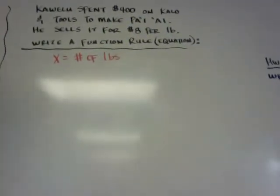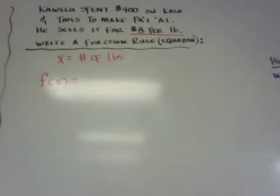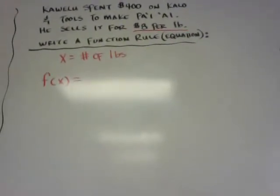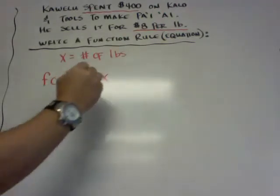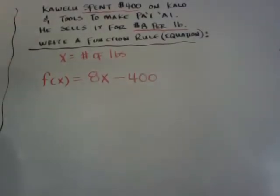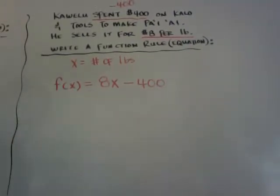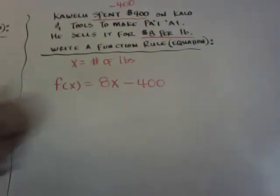So here's a little harder word problem. And it says Kavelu, he wants to sell Paiyai. So he spends $400 on Kala and tools to make the Paiyai. And then he sells it for $8 per pound. Write a function rule. So if x is equal to the number of pounds, the way you would write that equation is just simply f of x is equal to. And it's $8 per pound. So just like we did in the other equation here with the 5x. What you would do is you would write 8x, but now he's spent $400. So that means he's down $400. He's losing $400. So it's minus 400. So your function rule would be f of x is equal to 8x, which is $8 per pound, times, I'm sorry, minus the $400. And that would get him there. So that's how you write your function rules for word problems as well. So be careful. If they spend money, it's actually minus $400. Don't forget, it's minus $400.